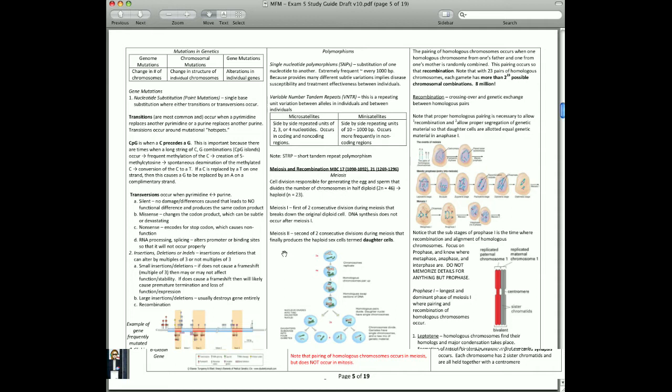and then you produce a haploid gamete that has only 23 chromosomes, and so that whenever they combine with another gamete, you're going to have a total of 46 chromosomes, which is normal for a human being.